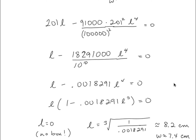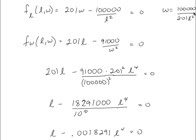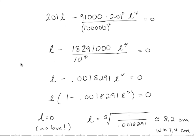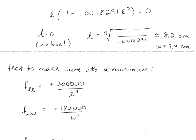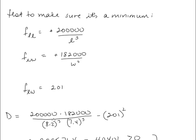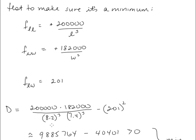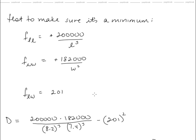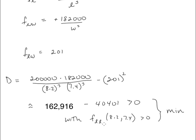With a length of 8.2 centimeters, we solve for W using the earlier relationship and get W approximately 7.4 centimeters. Now we apply the second derivative test: we compute the second L-partial, second W-partial, and mixed partial, then evaluate the discriminant D at L equals 8.2 and W equals 7.4. D is positive and the second partial is also positive, confirming we have a minimum.